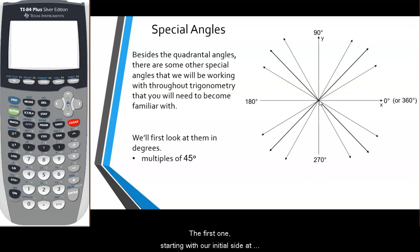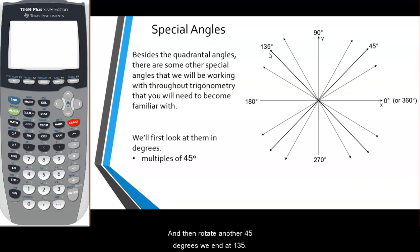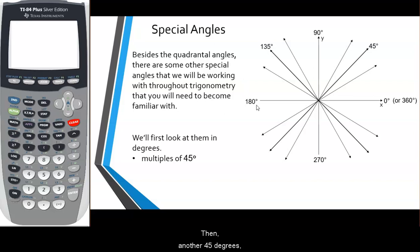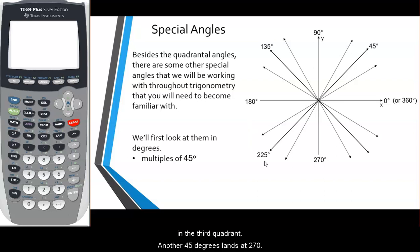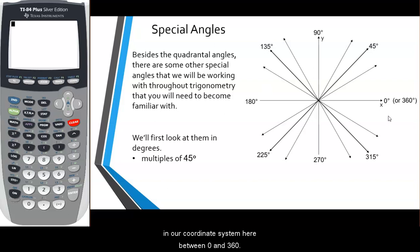Starting with the initial side at 0 degrees, we rotate 45 degrees counterclockwise to get 45 degrees in the first quadrant. Then 90, 135 in the second quadrant, 180, 225 in the third quadrant, 270, 315 degrees, and then 360. Those are the multiples of 45 degrees on the coordinate system between 0 and 360.